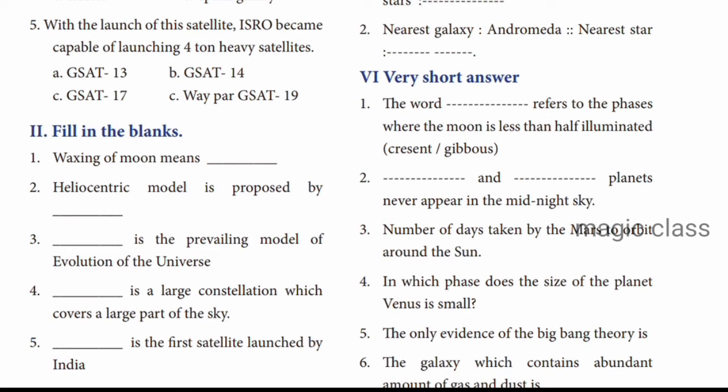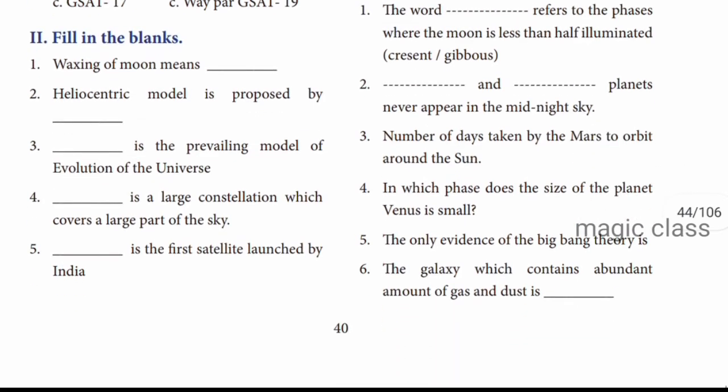Next is very short answers. Question 1: The word dash refers to the phases where the moon is less than half illuminated. The answer is crescent. Question 2: Dash and dash planets never appear in the midnight sky. The answer is Venus and Mercury. Question 3: Number of days taken by Mars to orbit around the sun. Mars takes double the time of Earth, so the answer is 687 days.